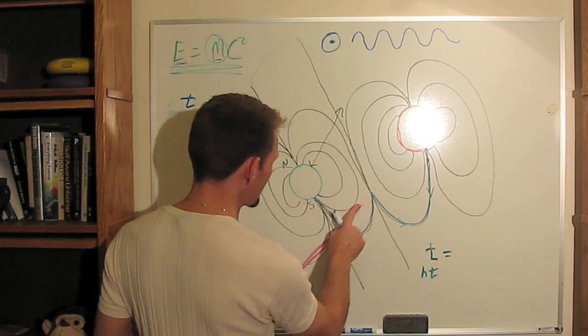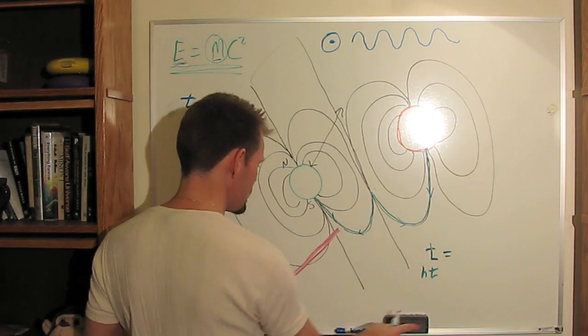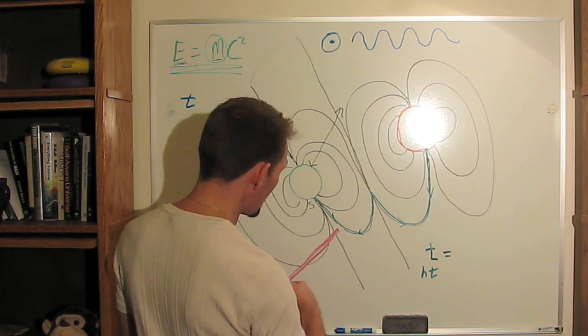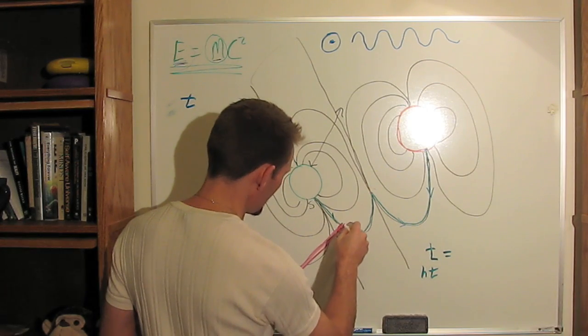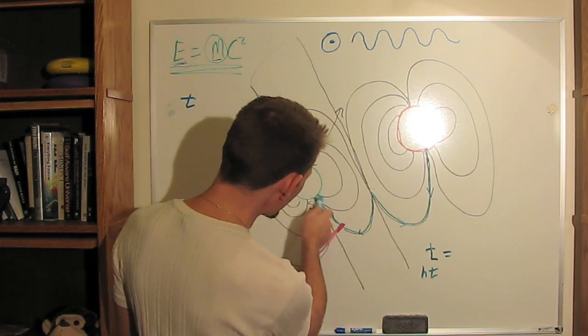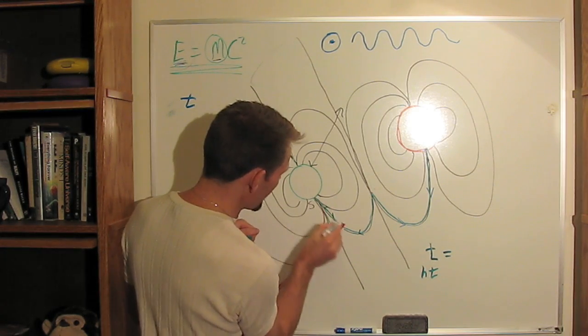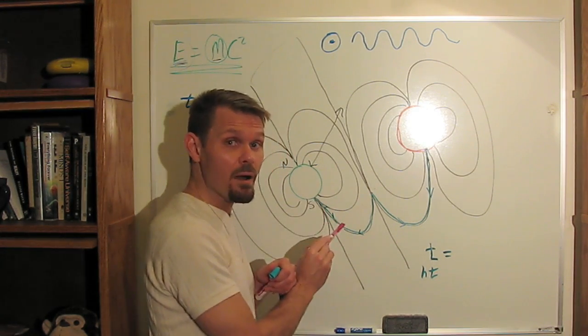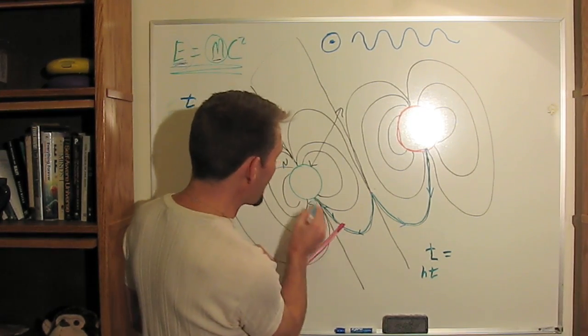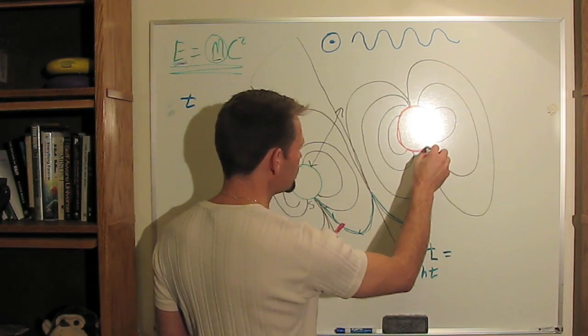When this sun-grazing comet crosses this wave, it creates a feedback in it. Because what happens is this wavelength no longer makes it all the way to the Sun. So it goes back and forth between here and here very quickly. The frequency of the hypertime wave increases, and we see an active region on the Sun.